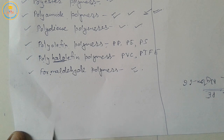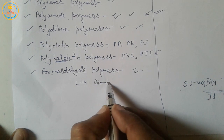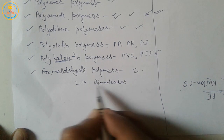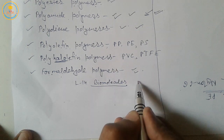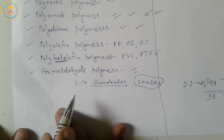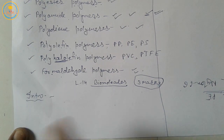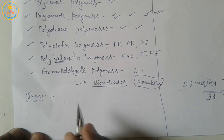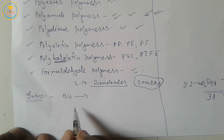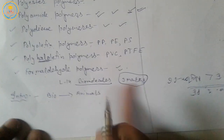In today's online chemistry class, we shall start a new chapter — Lesson 14, Biomolecules. It will carry three marks in the board examination. Introduction to biomolecules: the word 'bio' means animals and plants.